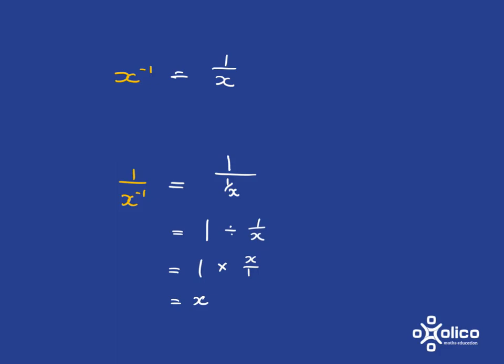So, notice here, if you've got x to the negative 1, it becomes 1 over x. And if you've got 1 over x to the negative 1, it's kind of, this becomes up, it just becomes x. It's almost like it swaps position.